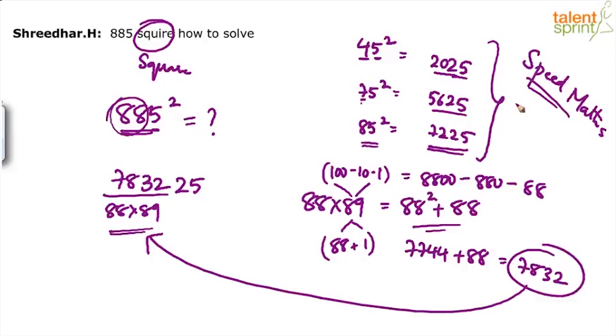There are other ways of doing it. If you don't want to do it this way, how can this be done? If you see 885, you can apply a plus b whole square. I'm just throwing one more way of doing it. What happens? 885 can be taken as 850 plus 35 square.